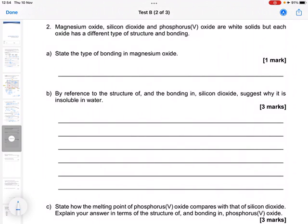Magnesium oxide, silicon dioxide, and phosphorus 5 oxide are white solids, but each oxide has a different type of structure and bonding.